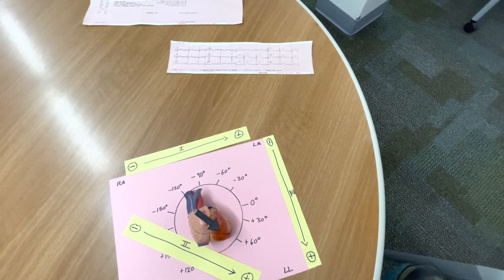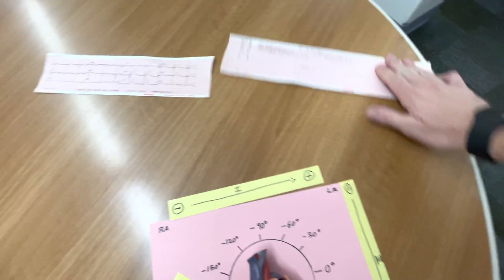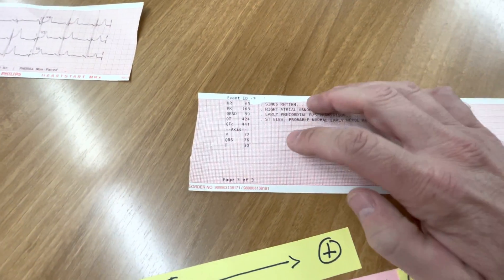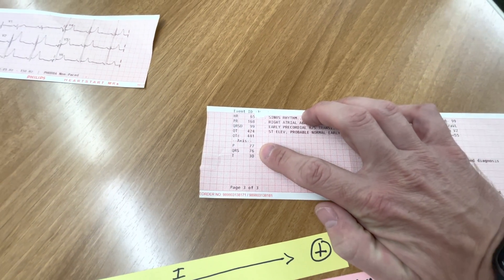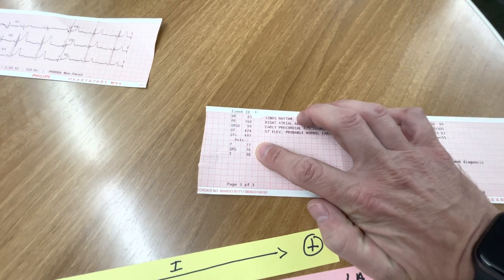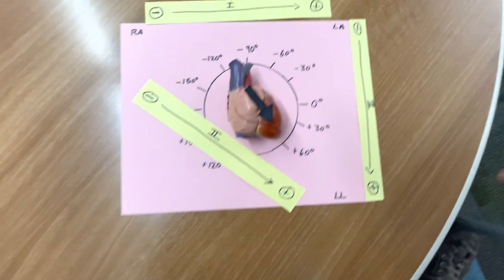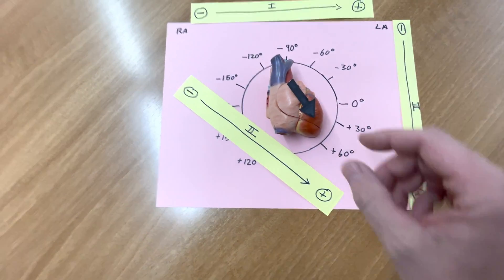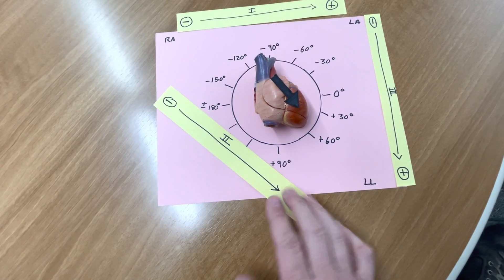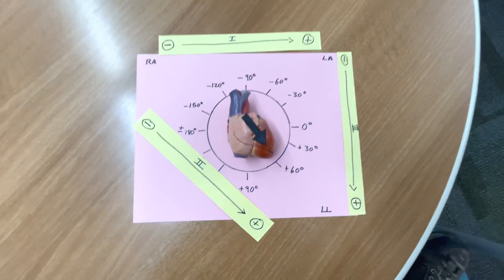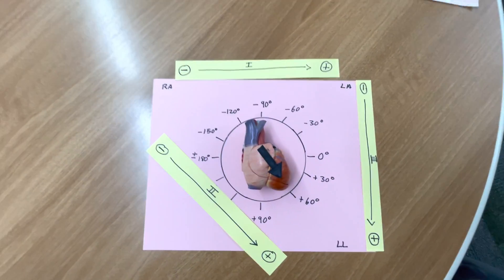Now, when it comes to axis deviation, the quickest way to determine that is just to go to your monitor, look at the QRS axis, and whatever that is in degrees tells you the actual axis. In this case, it's 75 degrees, which would mean that the axis would be right down here with me. So, let's talk about what normal axis is.